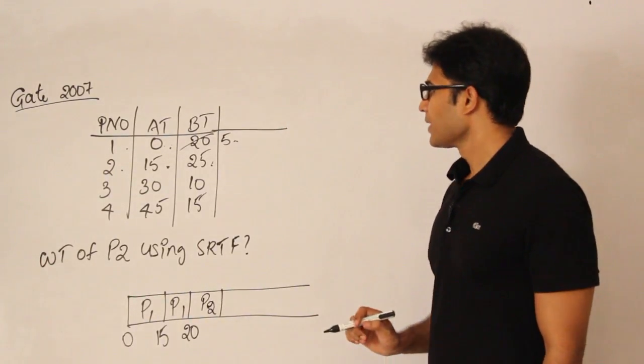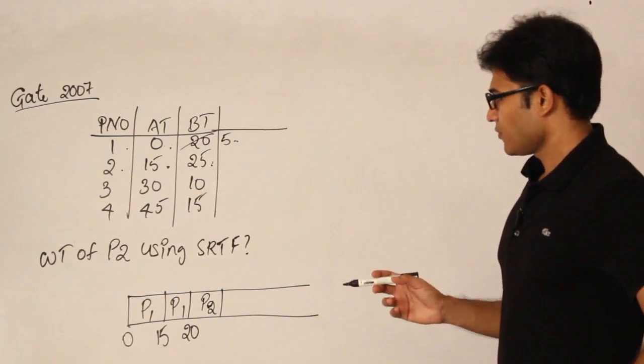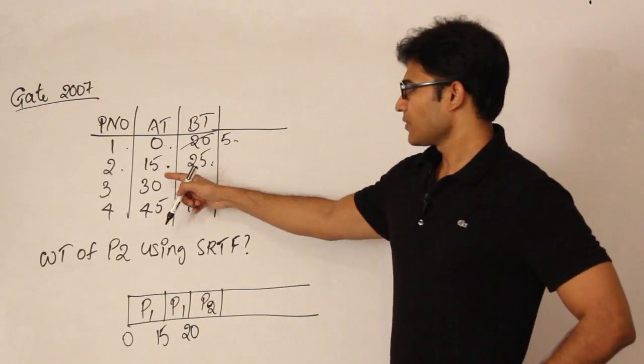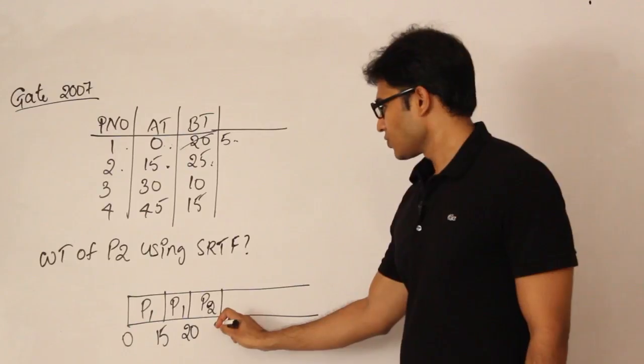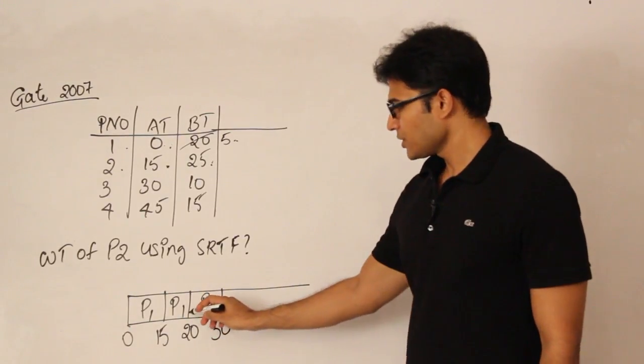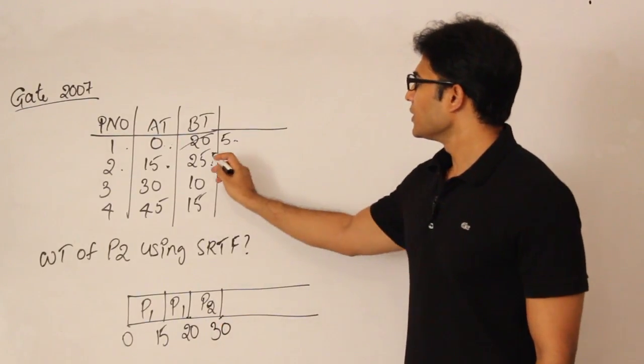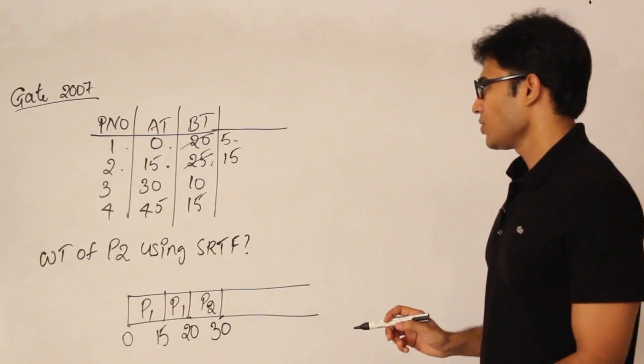Now it is going to be P2. So P2 is going to start at 20. Then how long should I run it till the next one becomes available? So when is the next one available? At 30. So till 30 you run it. Therefore how much time did you run P2 for 10 units? 20 to 30. So you decrement it by 10 which is nothing but 15 here.